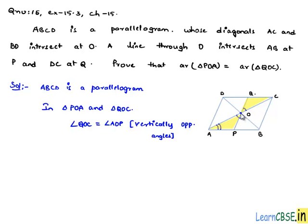And also angle OAP will be equal to angle QCO, since the diagonal in a parallelogram bisects the angle at the vertices. And also OA will be equal to OC since in a parallelogram diagonals bisect each other.